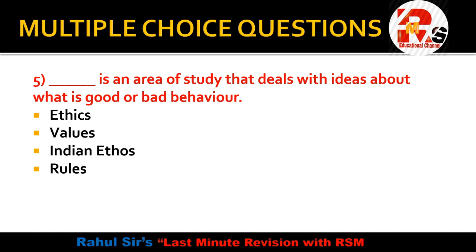Question number 5: Dash is an area of study that deals with ideas about what is good or bad behavior. The options are: Ethics, Values, Indian Ethos, or Rules. The right answer is Ethics. Ethics is an area of study that deals with ideas about what is good or bad behavior — it tells us what is right and what is wrong.